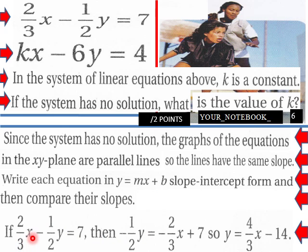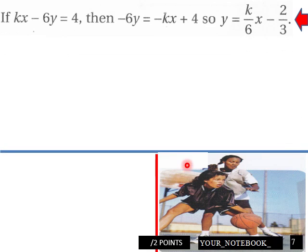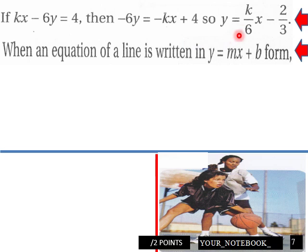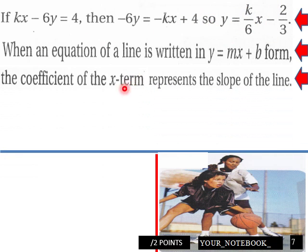So, if 2/3 x minus 1/2 y equals 7, then negative 1/2 y equals negative 2/3 x plus 7, so y equals 4/3 x minus 14. That's the one put into slope-intercept form. For kx minus 6y equals 4, then we solve for y here, we get this on this side. It's in slope-intercept form.